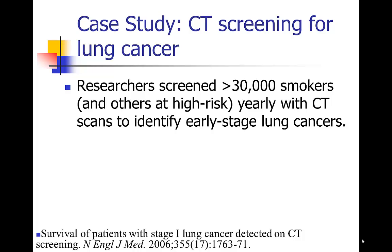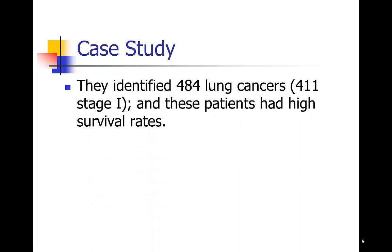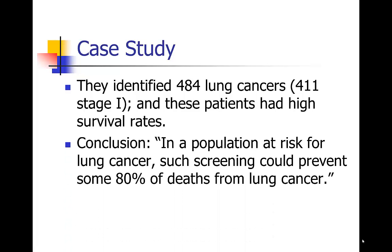A paper came out in the New England Journal of Medicine in 2006 which seemed to show at first pass that CT scanning was indeed effective. Researchers screened more than 30,000 smokers and other people at high risk of lung cancer annually with CT scans to identify early-stage lung cancers. Out of those more than 30,000 people, they identified 484 lung cancers, most of them in stage one — which is very atypical. Those patients were treated and had very high survival rates in the 88% to 90% range, much higher than survival from lung cancer in general. They concluded that CT screening was effective and that in a population at risk, such screening could prevent some 80% of deaths from lung cancer — which was really an over-extrapolation from the data they had.